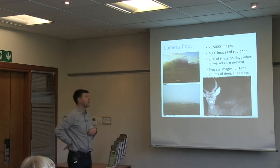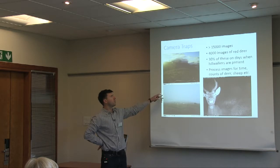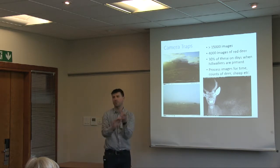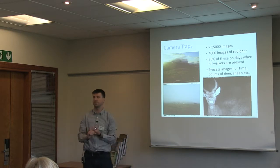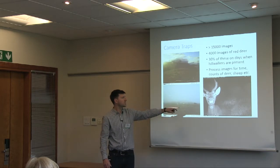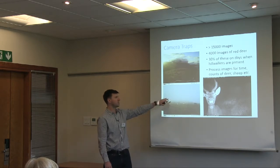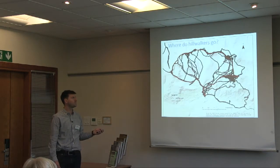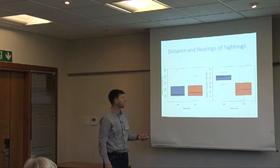An MSc student from Durham is currently working through all the photos. About 15,000 photos were captured, of which about 4,000 contained red deer, and around 30% of these were on days when hill walkers were present. We're processing images for the timing, deer demographics, whether sheep are present, weather conditions, and deer behaviour. We can then relate all of this back to our GPS data, since we know when people were on the hill, allowing us to link whether photos were taken when hill walkers were present or not.